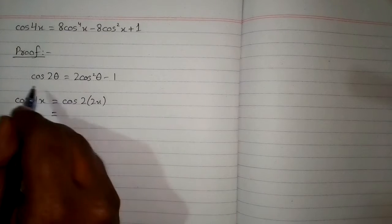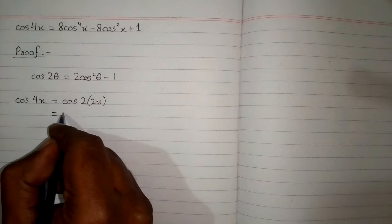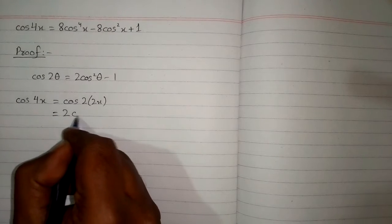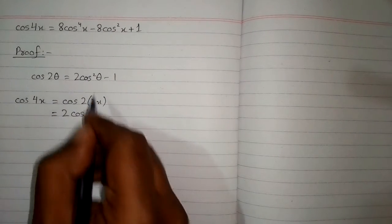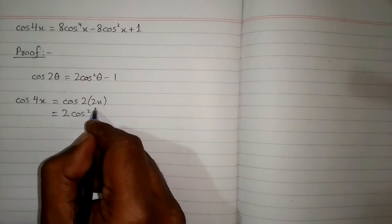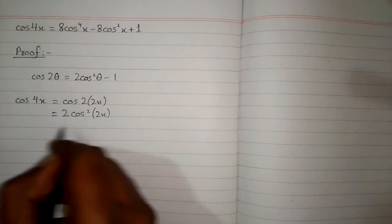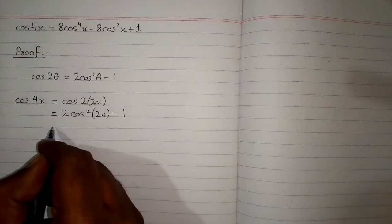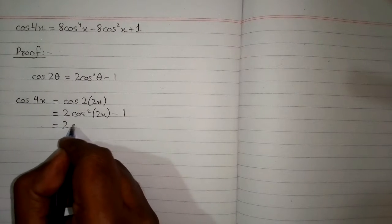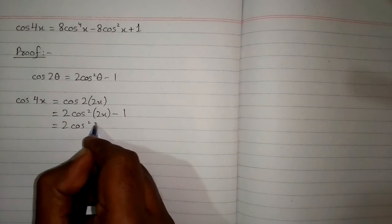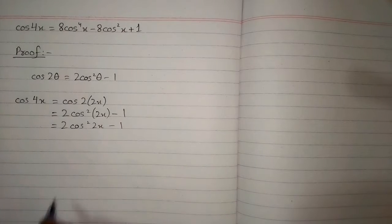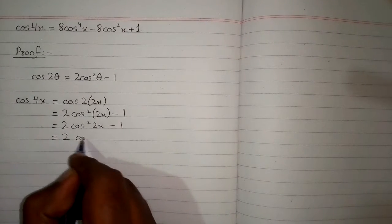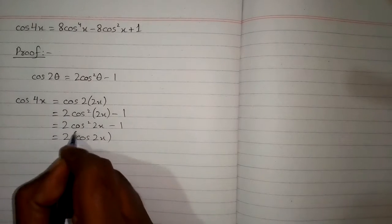Applying the formula with θ = 2x, cos(2θ) becomes 2cos²(2x) − 1. This can also be written with cos(2x) as a whole square: 2[cos(2x)]² − 1.